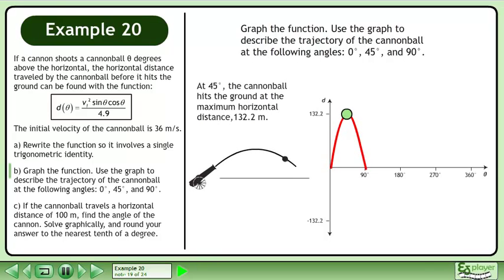At 45 degrees, the cannonball hits the ground at the maximum horizontal distance, 132.2 meters.